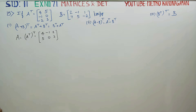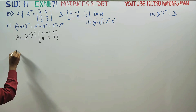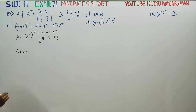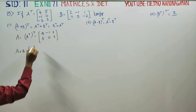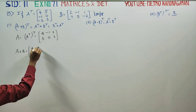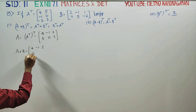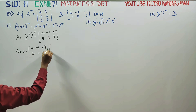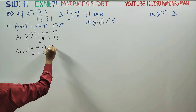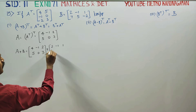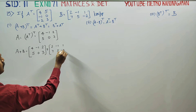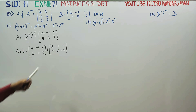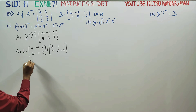Now, A plus B whole transpose. First, A plus B. What is my A? A is 4, minus 1, 2, 5, 0, 3. This is the B matrix. A plus B — you just have to add these two matrices.